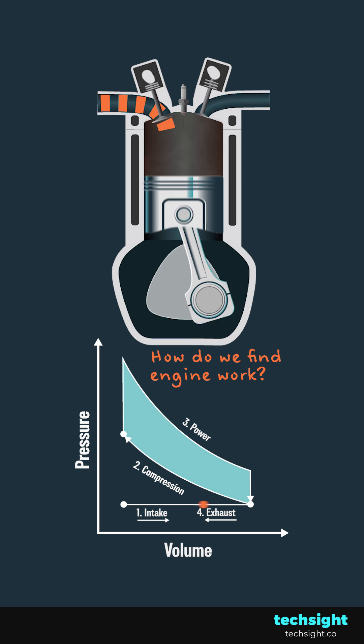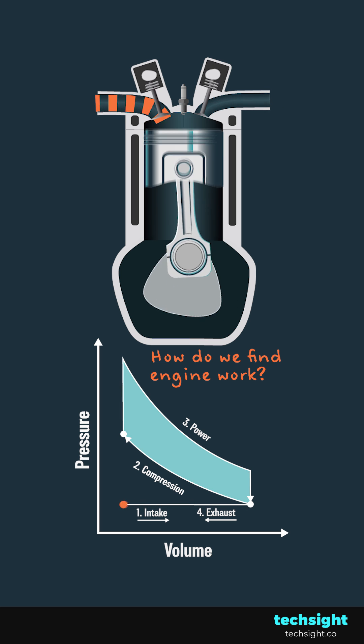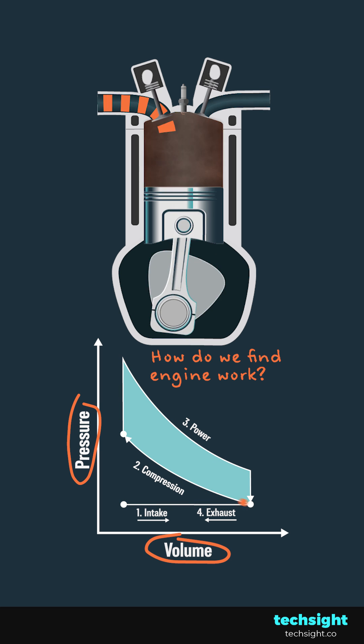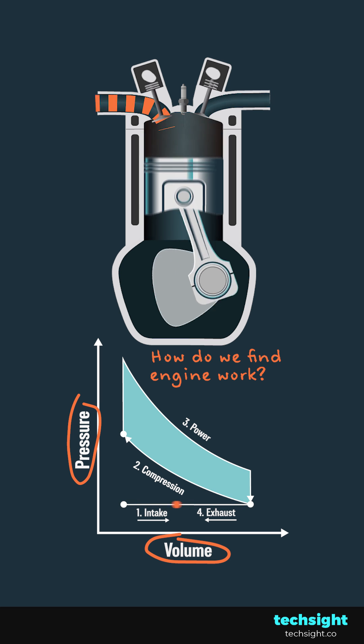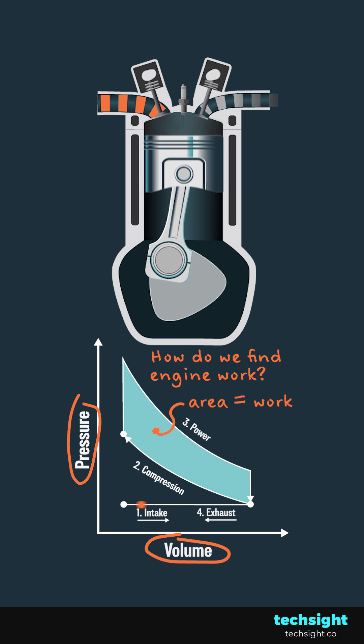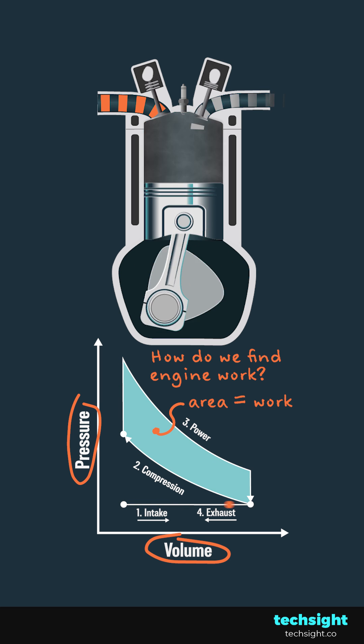But how do we apply the concept of work to an engine? Well, if we plot cylinder pressure by volume, we get a chart like this, and the enclosed area is equal to the work done per cycle.